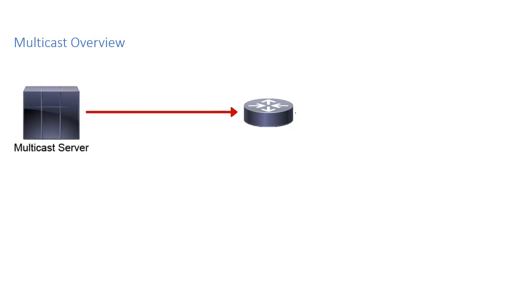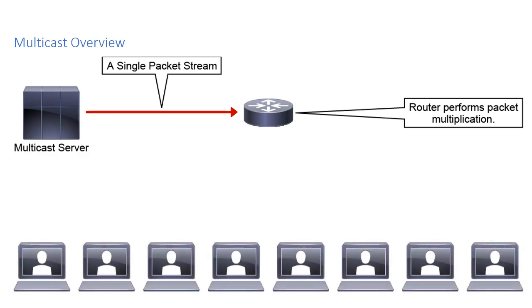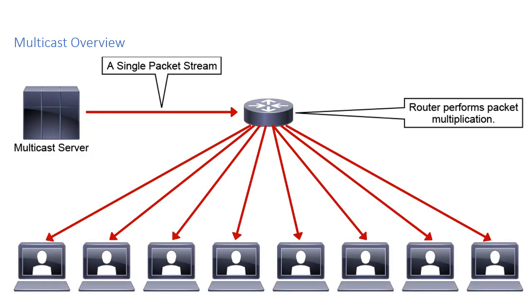Multicast is a technique where a multicast server can send a single packet stream out, and then routers on our network will perform packet multiplication. That way, if I have multiple receivers — in the example on the slide, we've got eight receivers — it's a single packet from the server that gets split by the router to go to all eight receivers. With traditional unicast, we would have a packet from the server for every receiver, which could cause a lot of congestion in the network and a lot of overhead on that multicast server.